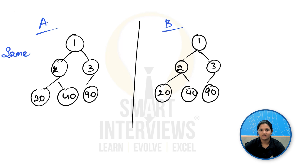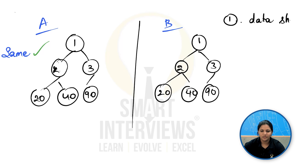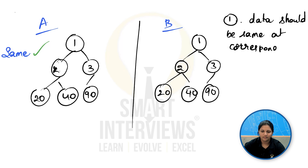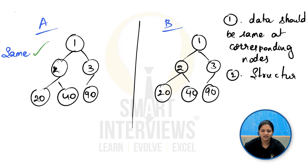So you are considering two factors: first, the data should be the same at corresponding nodes, and second, the structure should be the same. These are the two factors you are considering to check if two trees are same trees.